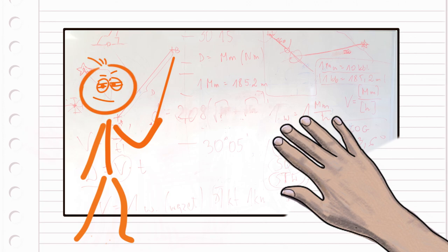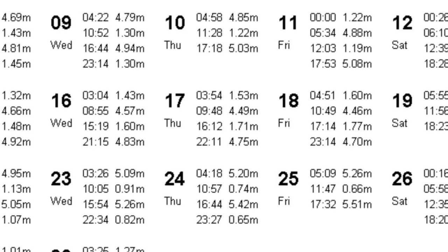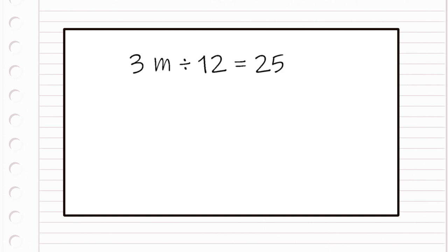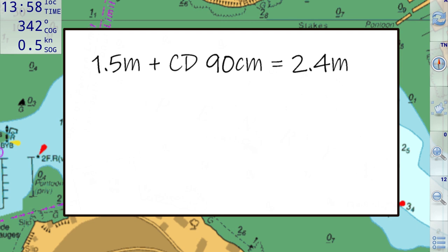First calculate the range. That's the difference between low and high water. In our example for June 17th in Falmouth, the range is 2.96 meters, so we'll call it 3. You need to divide this by 12, which gives you 25 centimeters.